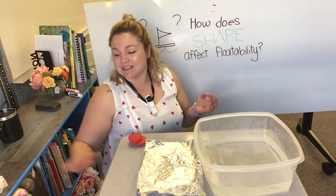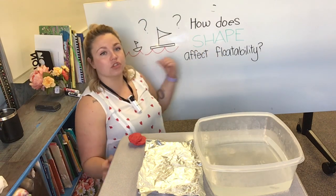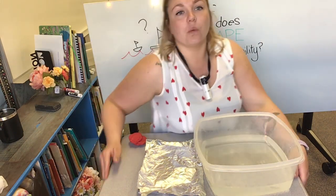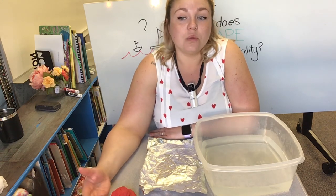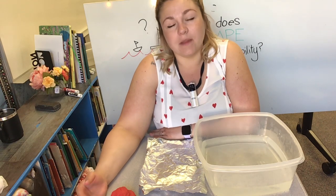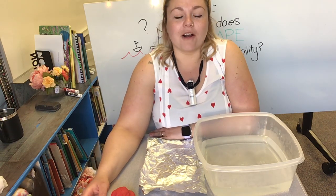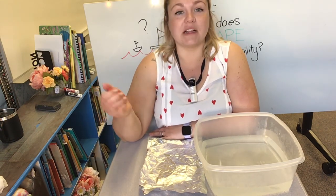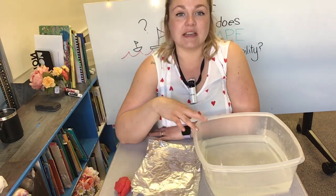Our investigation question for today is: how does shape affect floating? So we're going to be testing which shape floats better. Last time we were testing materials — do different materials float better than others? Most of us found that the plastic materials floated really well. So our second investigation is going to involve some clay or play-doh, a piece of tin foil, and some water to test in.